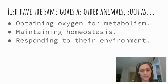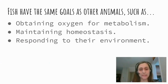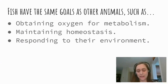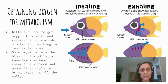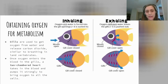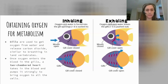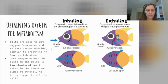Fish have the same goals as other animals — goals like obtaining oxygen for their metabolism, which has to get to all the cells in their body, maintaining homeostasis, which means keeping conditions inside their body stable no matter what's going on around them, and responding to their environment. Let's look at obtaining oxygen for their metabolism. Fish inhale and exhale water and get oxygen through gills, instead of inhaling and exhaling air and getting oxygen through the lungs as we do. But it's a pretty similar process. Gills are used to get oxygen from the water and release carbon dioxide, similar to breathing in land vertebrates.